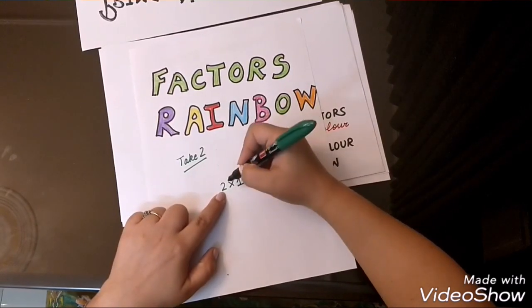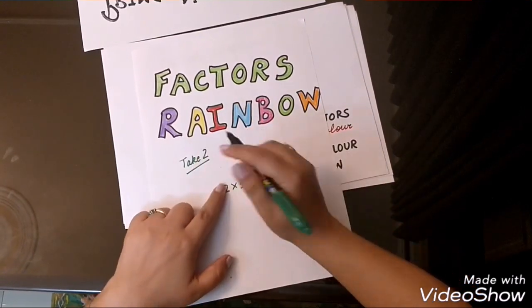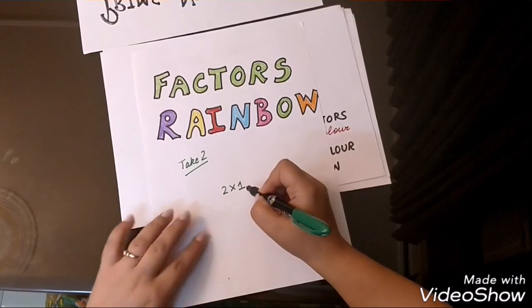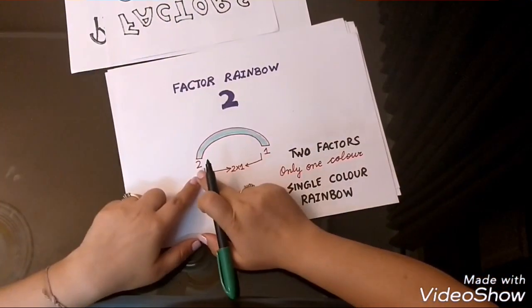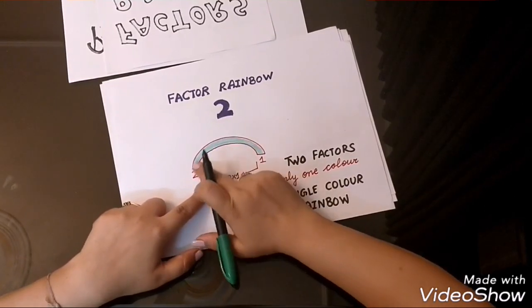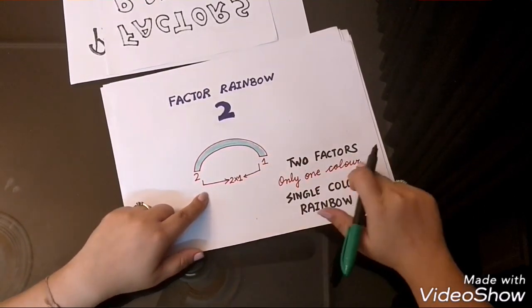With which number I will multiply 2 so that I get 2? 2 multiply by 1. So, we will get a 1 color rainbow for 2. 2 multiply by 1 gives us 2. So, this is 1 color rainbow. It has only 2 factors.